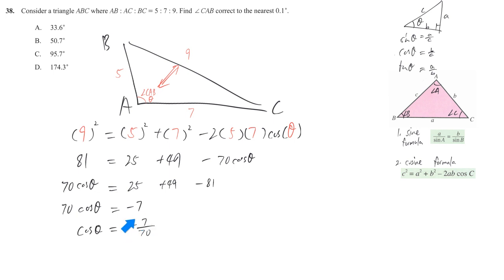It's totally fine to have negative ratio here, because the angle, even we draw that roughly, we know that this angle should be larger than 90 degrees. So that's why the cosine ratio will give you negative values. We just do the same as usual, change it to arc cosine, negative 7 over 70.